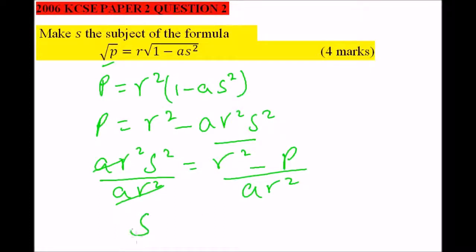We get the square root. So s is the square root of r squared minus p, all this is divided by ar squared. And that is how you work out that question.